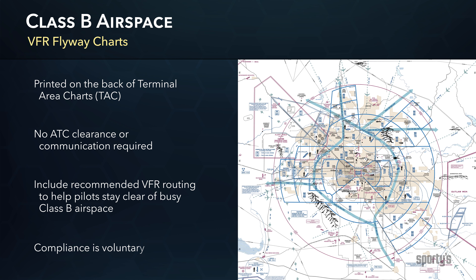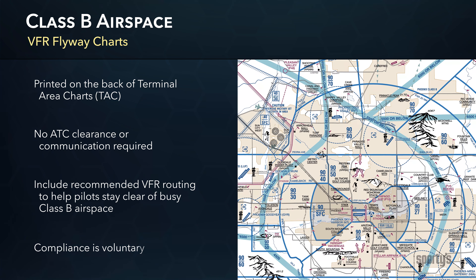Charted VFR flyways were created so that pilots could travel safely in areas heavily traversed by large turbine-powered aircraft. These flyways help the pilot plan flights into, out of, through, and near complex terminal airspace, avoiding altogether flying into Class B airspace. Pilot compliance with recommended flyways and associated altitudes is strictly voluntary.